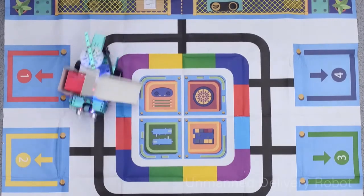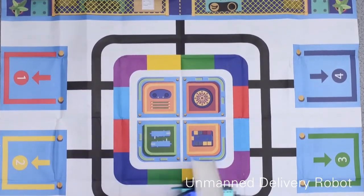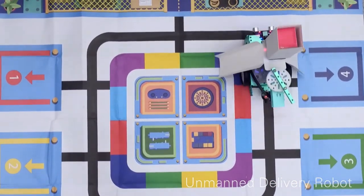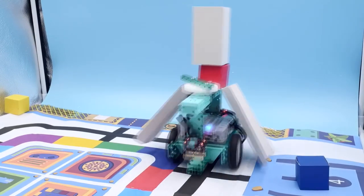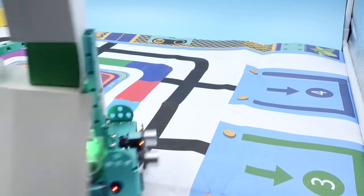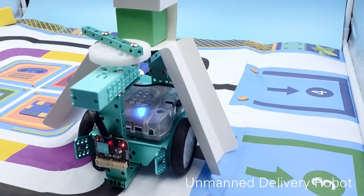Do you want to use the Mio robot to experience the joy of unmanned delivery? Using multiple inspection sensors and color recognition sensors, the car can send the goods to the designated warehouse. Come and try it!